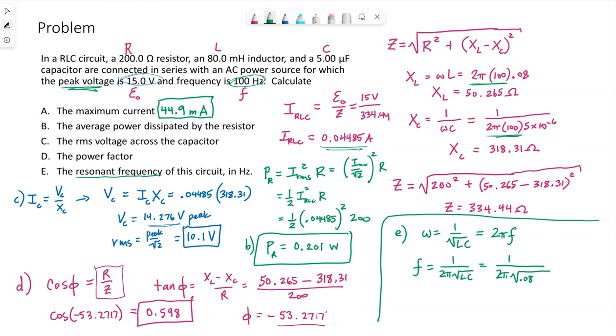L is 80 millihenrys, but we need to put that into henrys. C is 5 microfarads. So I'm plugging this in. I get 252 hertz as the resonant frequency of this specific circuit. That means if our power source, if we can change the frequency up to this 252 instead of 100, then we will maximize the current output.